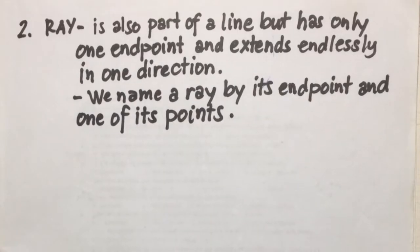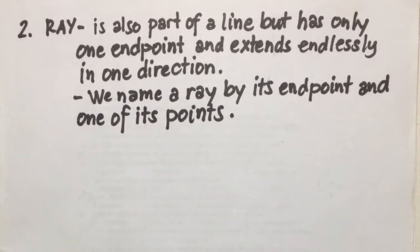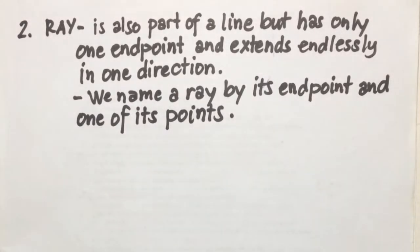The second subset of a line is a ray. A ray is also part of a line that has only one endpoint and extends endlessly in one direction. We name a ray by its endpoint and one of its other points.